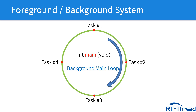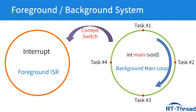Even if task 2 gets an emergency, it still has no chance to run until task 1 has finished. If we want a task to handle an emergency and give a reaction immediately, we need to put the task into the interrupt, also known as ISR. So the main function is the background and the interrupt is the foreground.